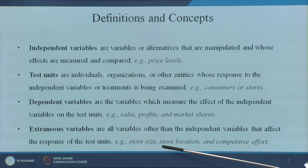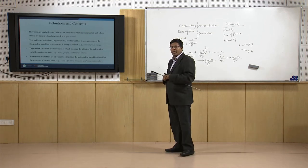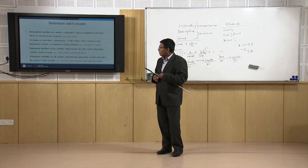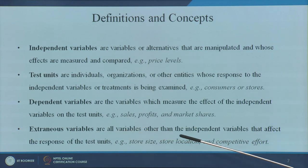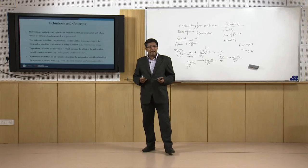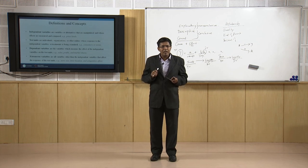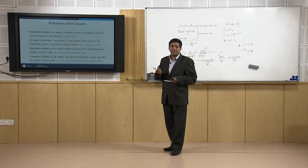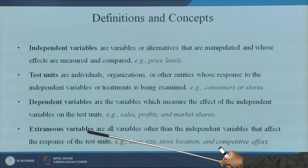Extraneous variables are those variables besides the independent variables — for example, store size, location of the store, or how much effort they are putting to fight competition. They are not directly independent variables and not directly affecting the dependent variable, but they still have an impact. Store size is not a cause, it is not an independent variable, but it may still have an effect. These kinds of variables are classified as extraneous variables.